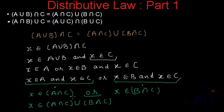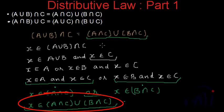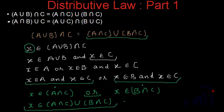X is either an element of A intersection C or it is an element of B intersection C, or it can be in both of them if X is in both A and B. Whatever may be the case, X will definitely be there in the union of A intersection C and B intersection C, which is the right-hand side of this distributive law. So this is the written proof of the first distributive law, and after this we are going to prove the second distributive law.